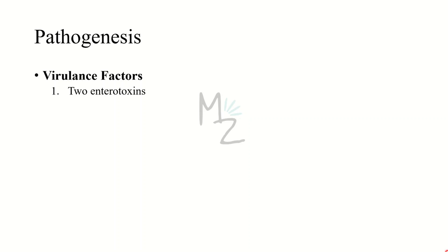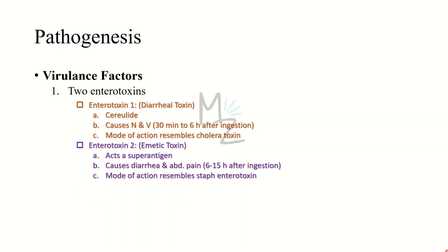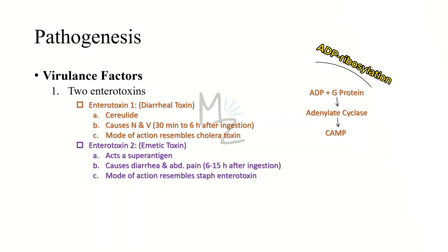Pathogenesis: Bacillus cereus produces two enterotoxins, which are its virulence factors. The mode of action of the first enterotoxin is the same as cholera toxin — it adds ADP ribose to a G protein (ADP ribosylation), stimulating adenylate cyclase and increasing cyclic AMP within the enterocyte. The second enterotoxin resembles staphylococcal enterotoxin and acts as a superantigen. Enterotoxin one is the cereulide (the emetic toxin), causing nausea and vomiting, with an incubation period of 30 minutes to 6 hours. The second enterotoxin causes diarrhea and abdominal pain, with an incubation period of 6 to 15 hours.